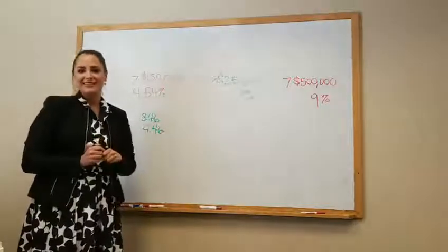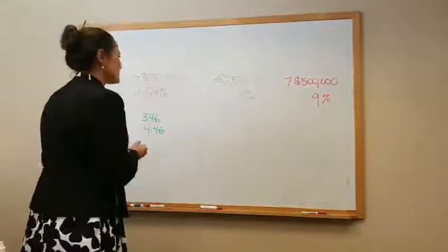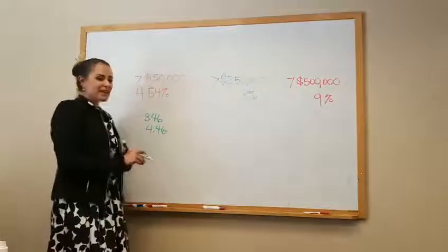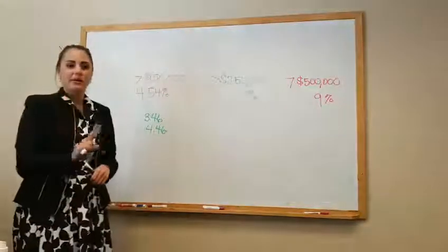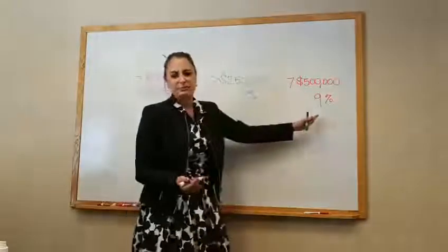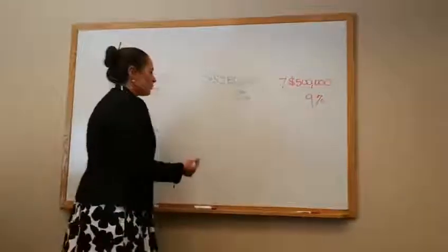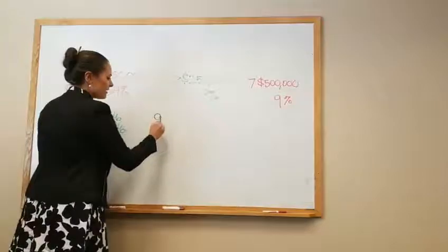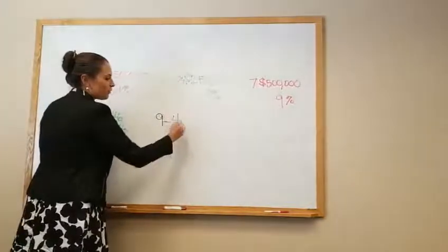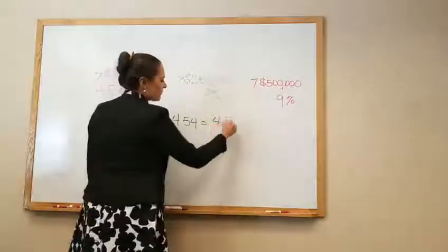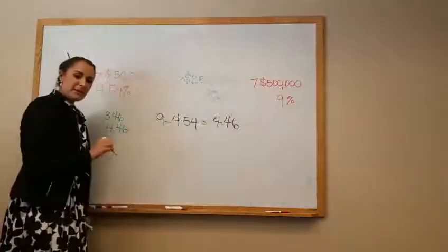Whenever you'd like to calculate percent increase, step one is finding the difference between the two numbers of interest. So in our case, 4.54 and let's use 9% since it's the big one. We want to know what is the difference between 9 and 4.54? 9 minus 4.54 is equal to 4.46. This is step one in calculating percent increase.